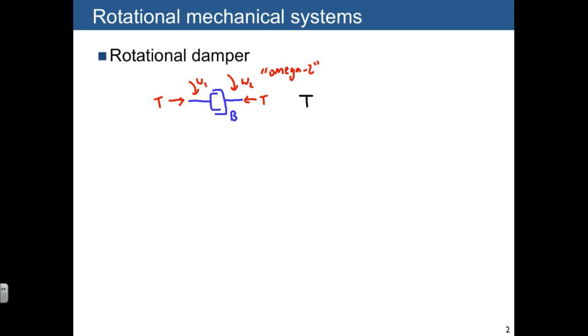And the element law for this is just T is equal to B times omega-1 minus omega-2, where omega-1 and omega-2 are defined in the same direction as the torque on the left-hand side.